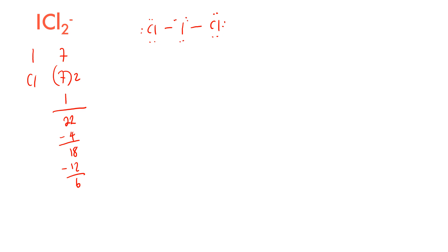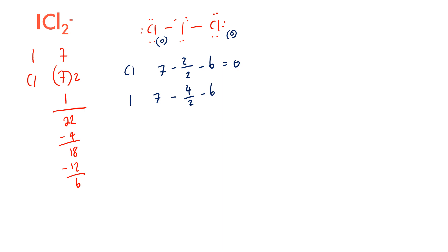For the formal charges: chlorine is group 7 minus 2/2 (bonding electrons) minus 6 (lone pairs), giving 7 minus 1 minus 6 equals 0. For iodine, also in group 7 but with more bonding electrons: 7 minus 2 minus 6 gives minus 1. This gives an overall charge of minus 1 on our ICl₂⁻, which is correct.